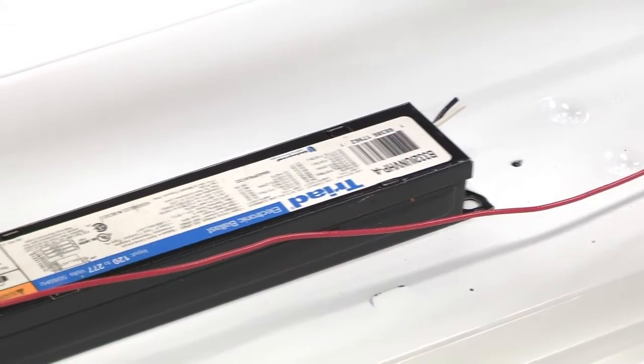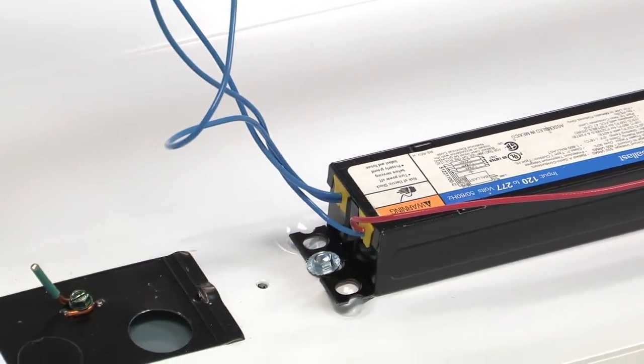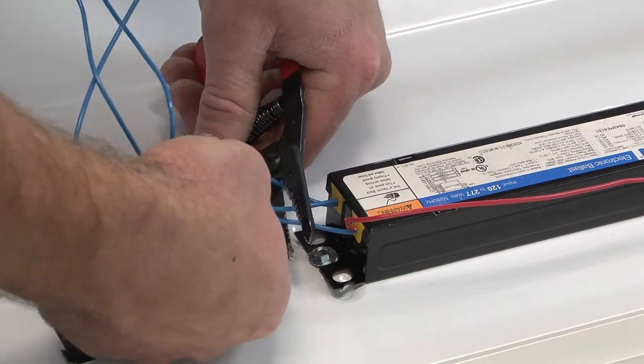Locate the socket lead wires on the opposite side of the ballast. You will need to cut these wires close to the ballast as well.